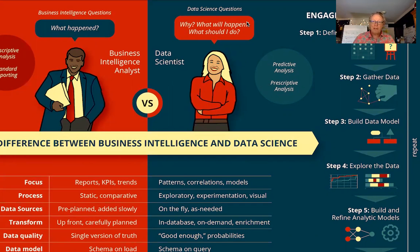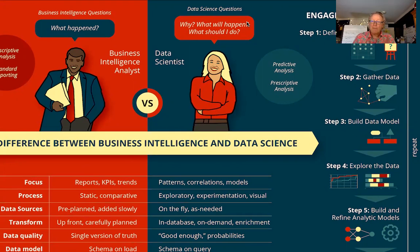Let me give you a simple example. If I'm in a digital marketing organization trying to figure out what ad to show you and I have 90% confidence the ad is going to work, that's good enough — because the cost of being wrong, of showing you the wrong ad, is a fraction of a penny. However, if you're going to the hospital and I'm 90% confident this medicine is not going to kill you, you probably might want to go to a different hospital. So the cost of being wrong is everything.